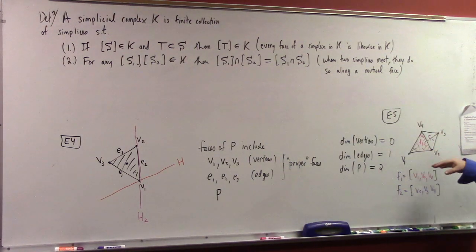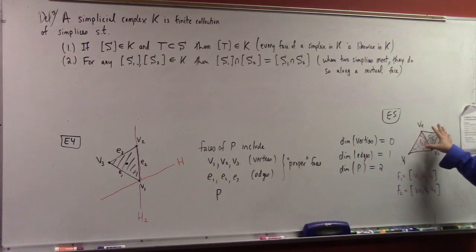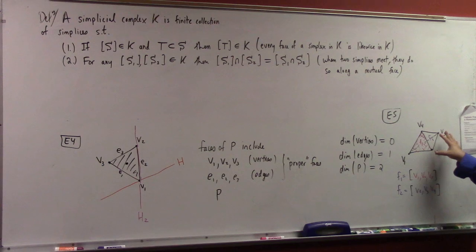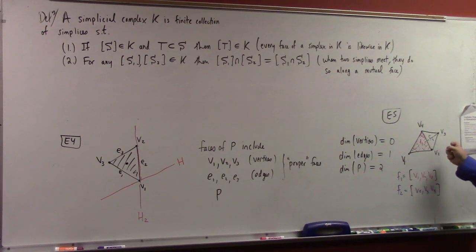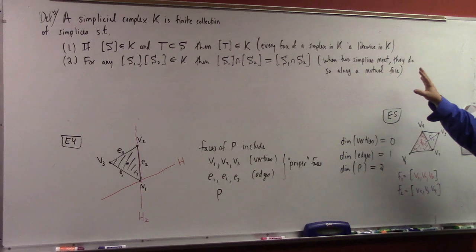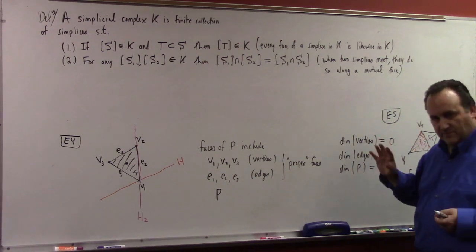Similarly, the simplicial complex for the tetrahedron would be the union of all four faces, all four vertices, all six edges, and the tetrahedron itself — the polytope generated by all four points. All of that together is a simplicial complex describing this tetrahedron. If you take any two of those simplices and take their intersection, they meet along an edge, or two edges meet at a vertex, which is again a face. This is just systematizing the nature of what a polytope looks like in its relation to edges, vertices, and faces.